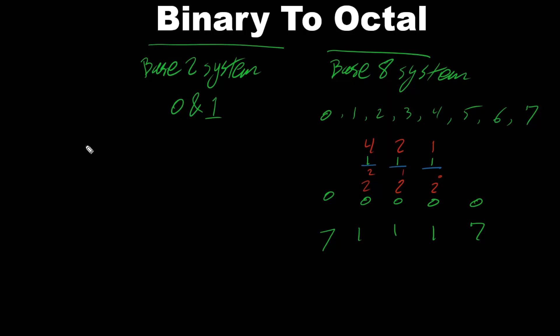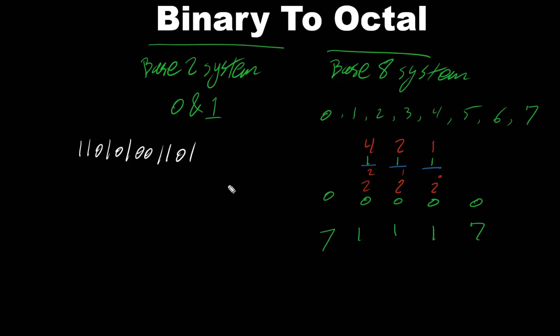Now let's say we have a binary number: 1 1 0 1 0 1 0 1 0 1 1 0 1. To convert it to octal, we count from right to left and separate every 3 bits, because for every octal number we have 3 bits.